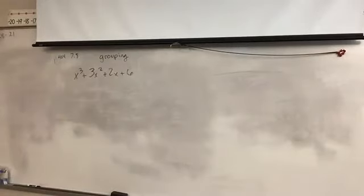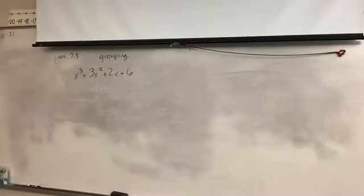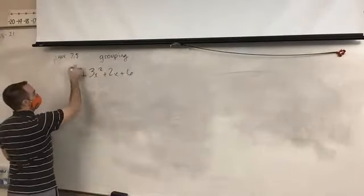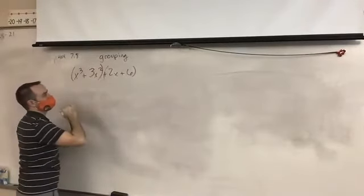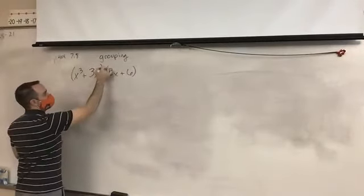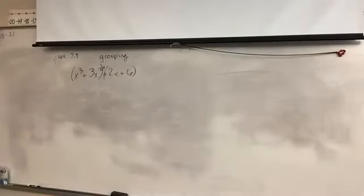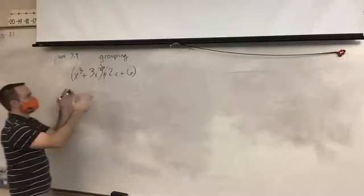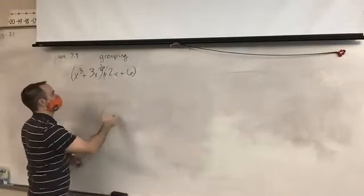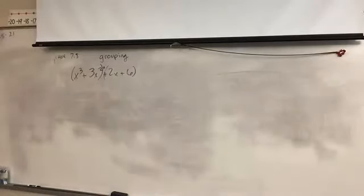We're going to take our four terms — and we can only do this with four terms — and split them up into two and two. I'm going to group these first two together and these last two together. Just know that we're still adding these two groups together, so there's still an addition sign in between. I'm going to group the first two and the last two together in parentheses. From there, I'm going to look at just one set of parentheses at a time.